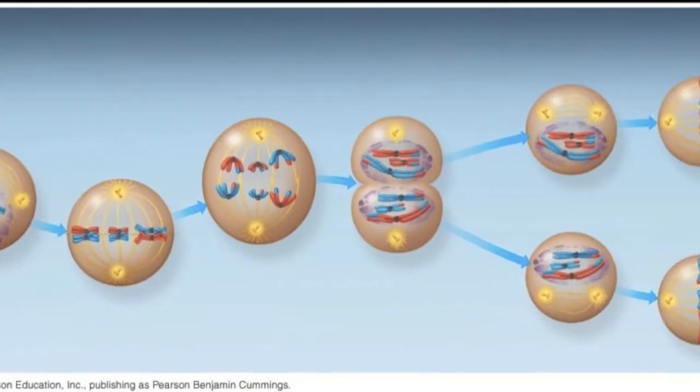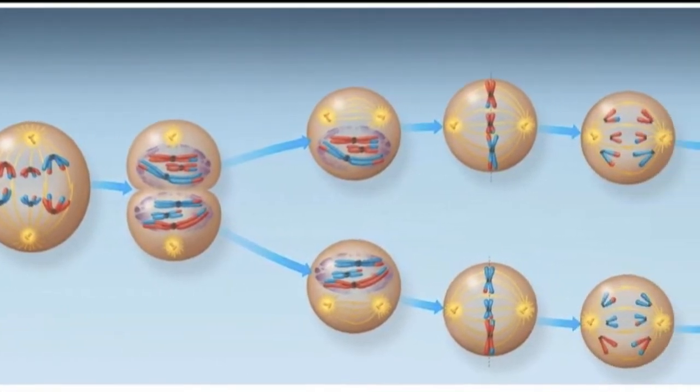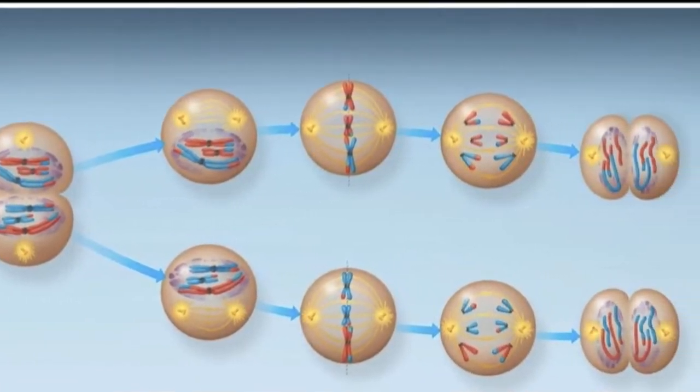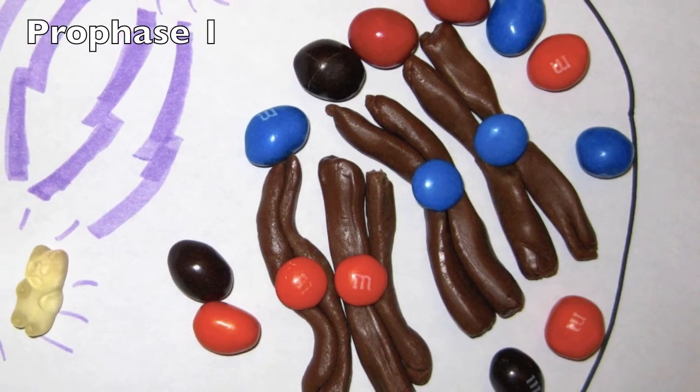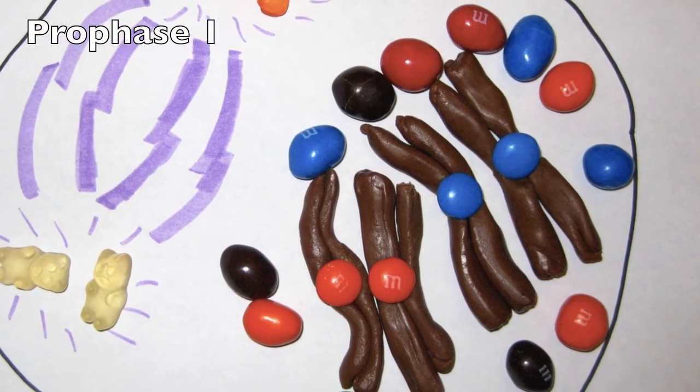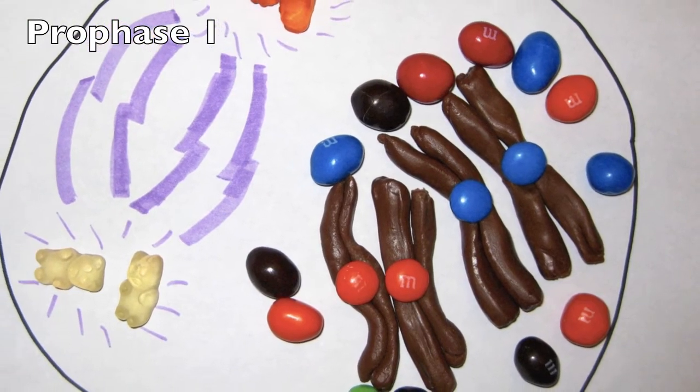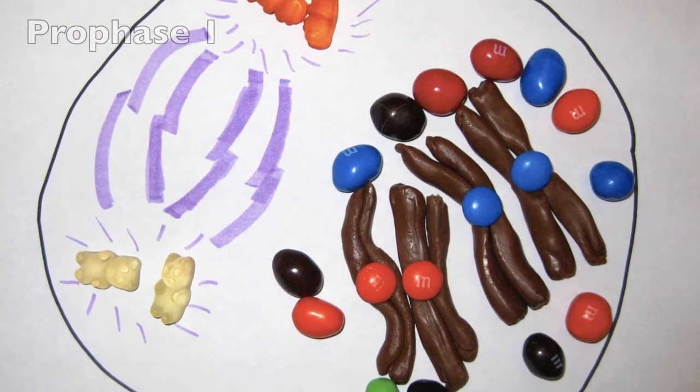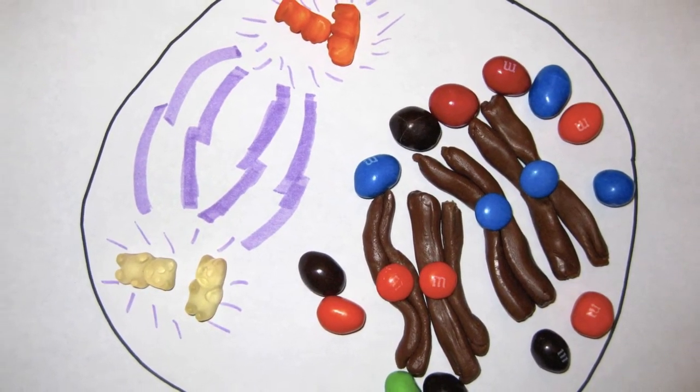Meiosis I separates homologous chromosomes, while meiosis II separates sister chromatids. In prophase I, chromosomes condense and homologous chromosomes pair up. Here, we see Tootsie Rolls representing chromosomes and the colored M&Ms designating pairs of homologous chromosomes. But remember, they are not identical.